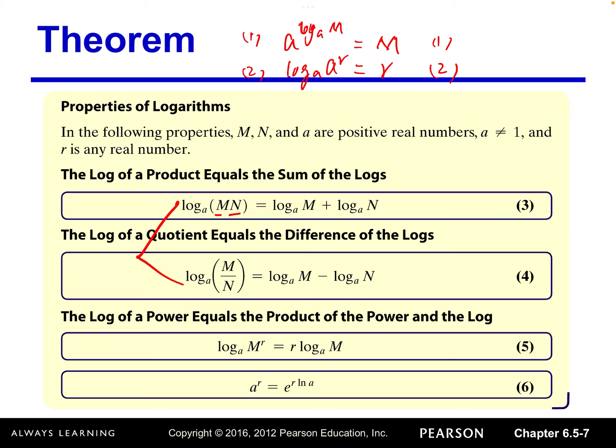The other property is the log of a power equals the product of the power and the log. So log base a of m raised to the r power — the power r can move to the front as a factor. Formula two actually uses the same law: the power moves to the front, and log base a of a equals one, so one times r equals r.